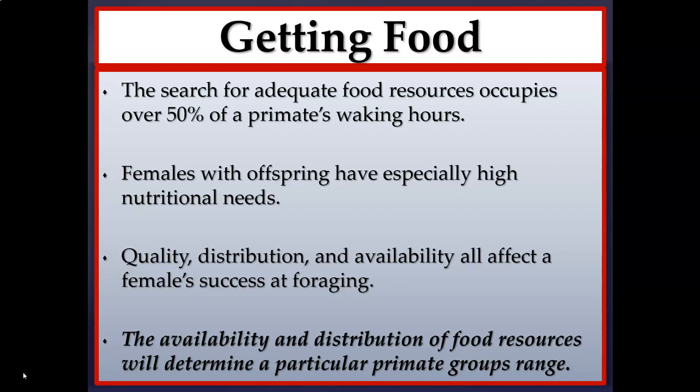Especially females with young will have high nutritional demands since they're not only supporting themselves but also their offspring. The three factors that will affect a primate's ability at acquiring food are quality, distribution, and availability. Quality refers to the caloric value of the food. Food sources like vegetation and fruit tend to be lower in calories, whereas food sources like nuts, insects, and meat tend to be higher.